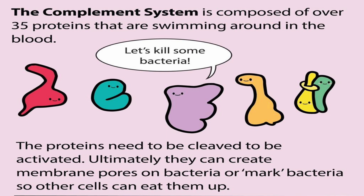In our immune system, there are phagocytic cells and antibodies. These cells help the proteins. If phagocytic cells and antibodies don't have the ability to damage or kill, that's the ability to enhance the proteins. This is the Complement System. This is simple — it works against infection.